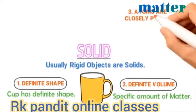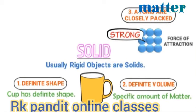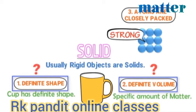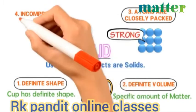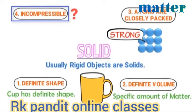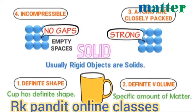Thirdly, the molecules or atoms of solids are closely packed together and uniform. There is a strong force of attraction between the molecules of a solid. If someone asks why solids have definite shape and definite volume, your answer should be: there is a strong force of attraction between the molecules or atoms of solid. Due to this attractive force, solids get definite shape and definite volume. Fourthly, solids are incompressible. The atoms or molecules of solids are closely packed together with no gap or empty space between them. Thus, you cannot compress these molecules, and that's why solids are incompressible.